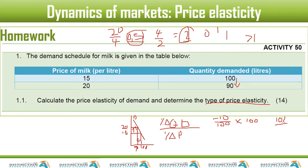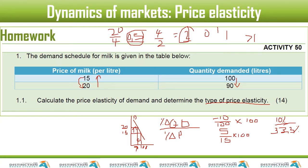Price changed from 15 to 20, which is an increase of 5. So 5 divided by 15 times 100 gives 33.3%. The percentage change in price is 33.3%. Then we calculate: 10 divided by 33.3, which gives us 0.3.